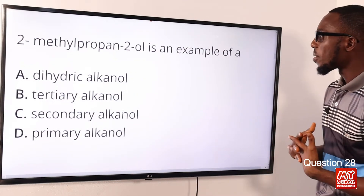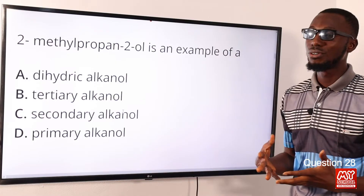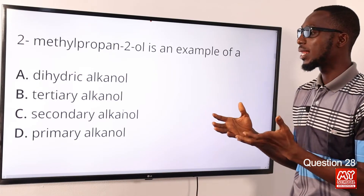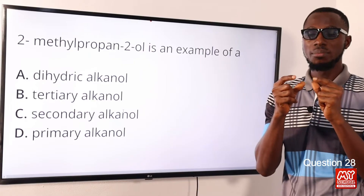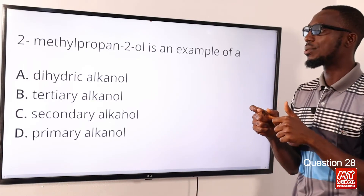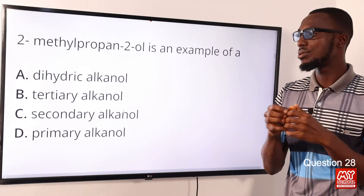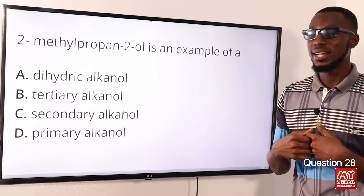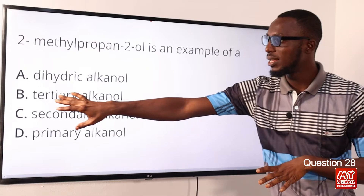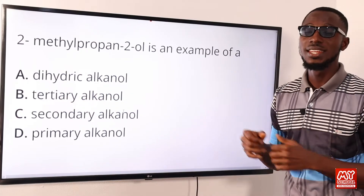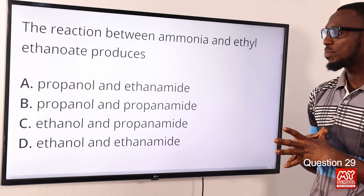Question 28: 2-methylpropan-2-ol is an example of what? It is an alkanol, but we want to determine if it is primary, secondary, or tertiary. A primary alkanol has one alkyl group attached to the carbon carrying the hydroxyl group; secondary has two; tertiary has three. When we draw out the structure of 2-methylpropan-2-ol, we can see clearly that it is a tertiary alkanol. Option B is the correct option.